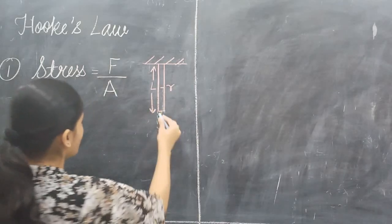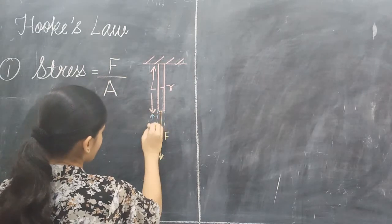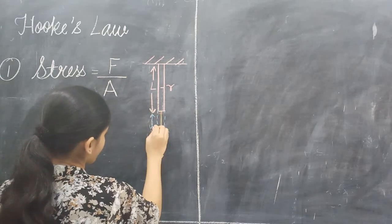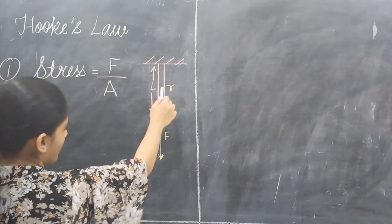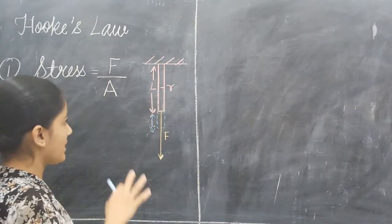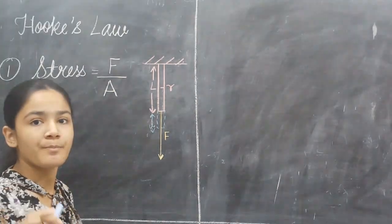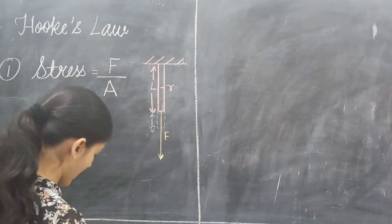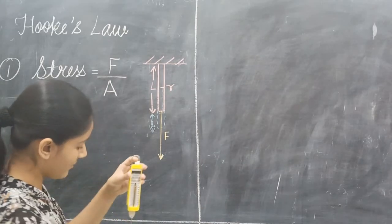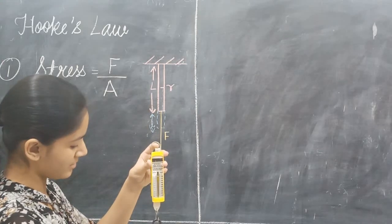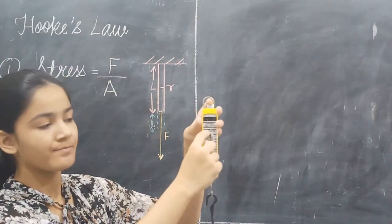Let us consider this elongation as small l. Now, since we are considering the radius of the wire as small r, its cross-sectional area will be π r squared. We have applied the mass and now there is an elongation.